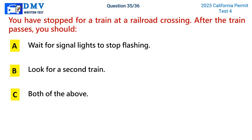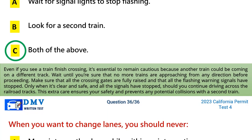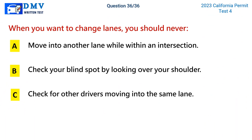Question 35: You have stopped for a train at a railroad crossing. After the train passes, you should. A) wait for signal lights to stop flashing, B) look for a second train, C) both of the above. The correct answer is C. Even if you see a train finish crossing, remain cautious because another train could be coming on a different track. Wait until you're sure no more trains are approaching from any direction, all crossing gates are fully raised, and all flashing warning signals have stopped before proceeding across the railroad tracks.